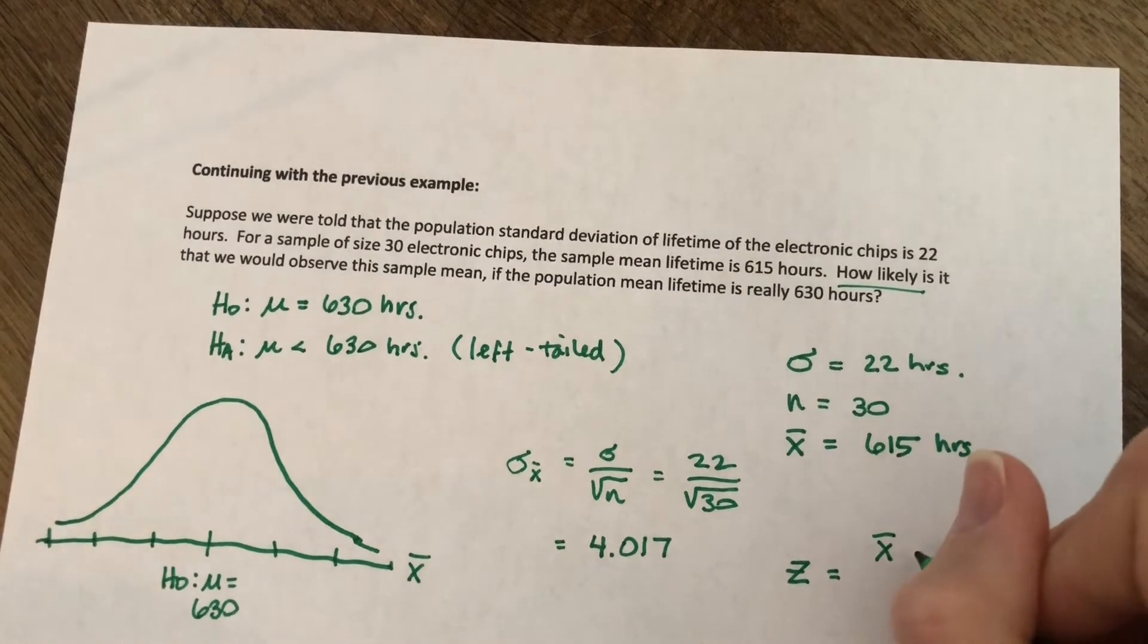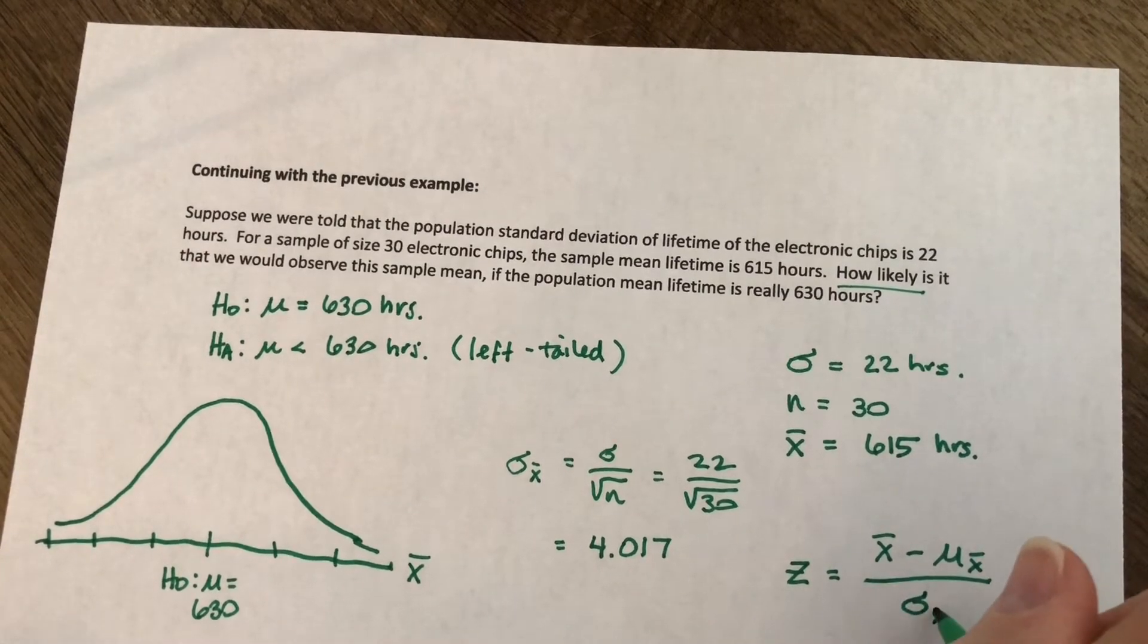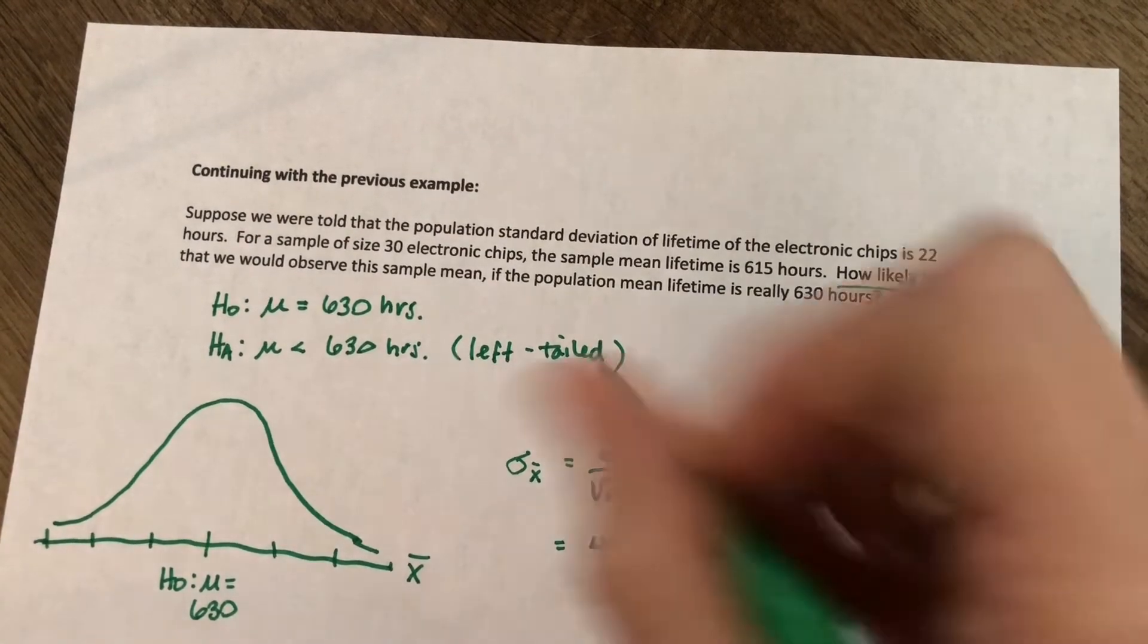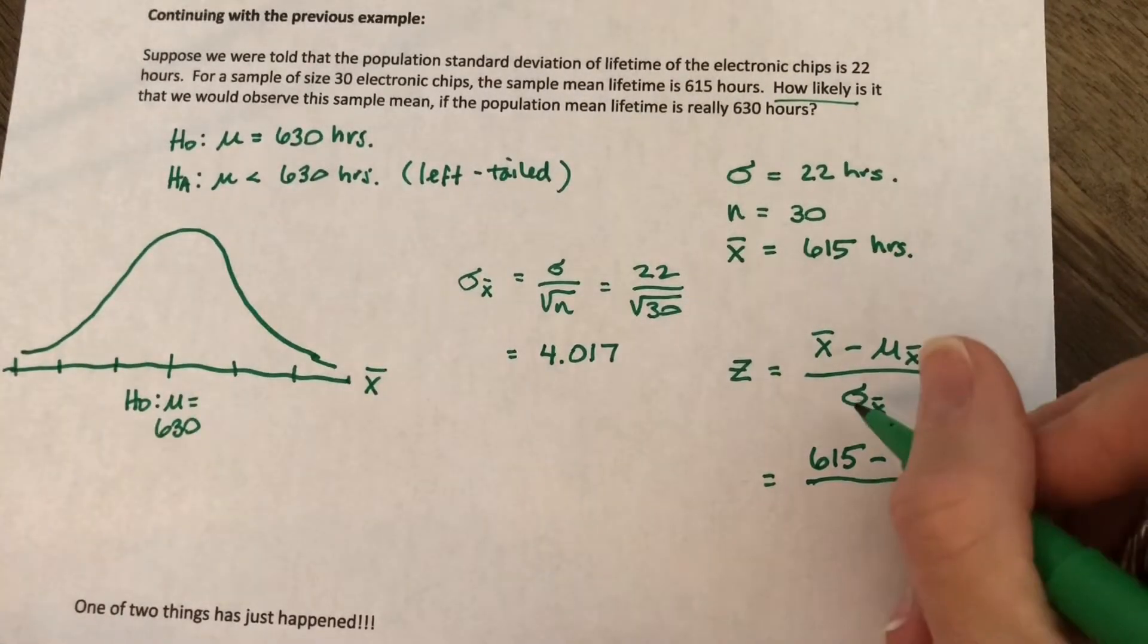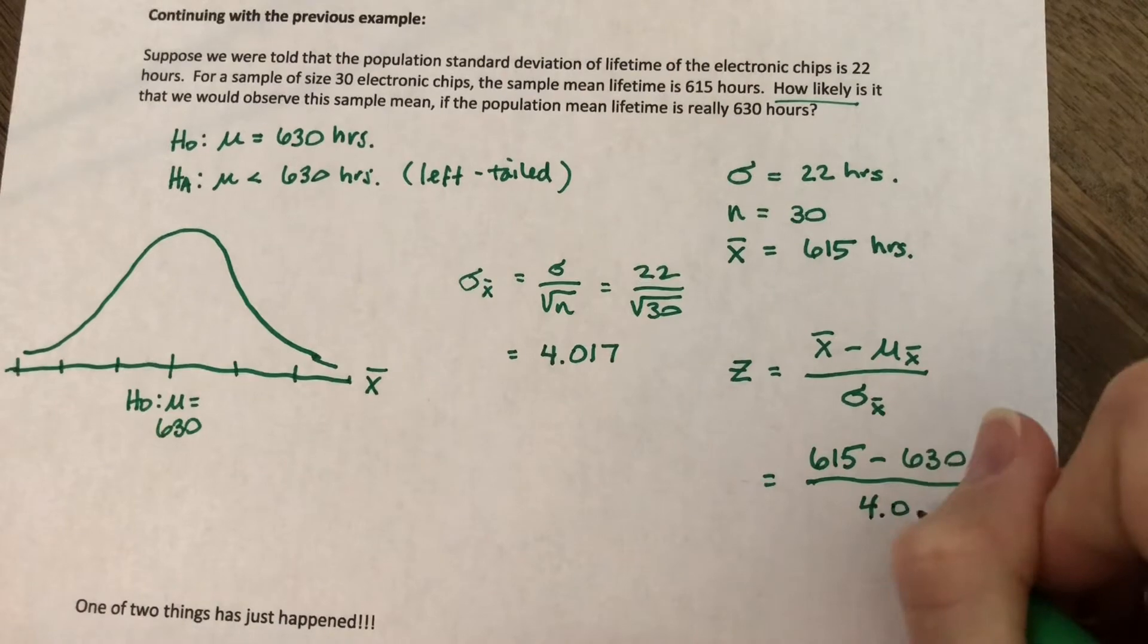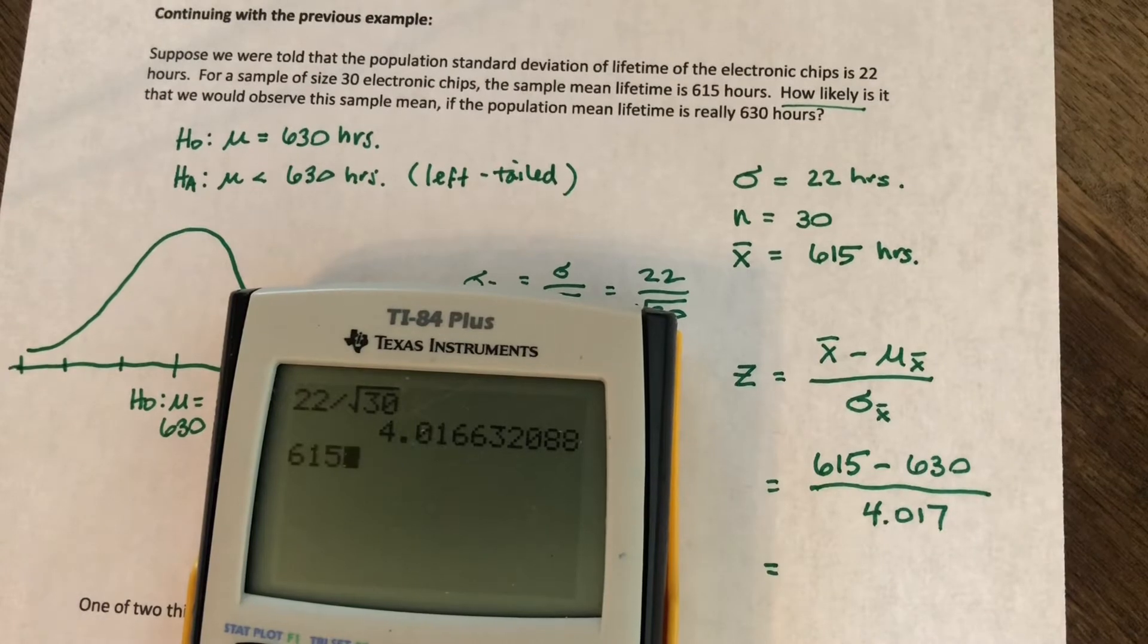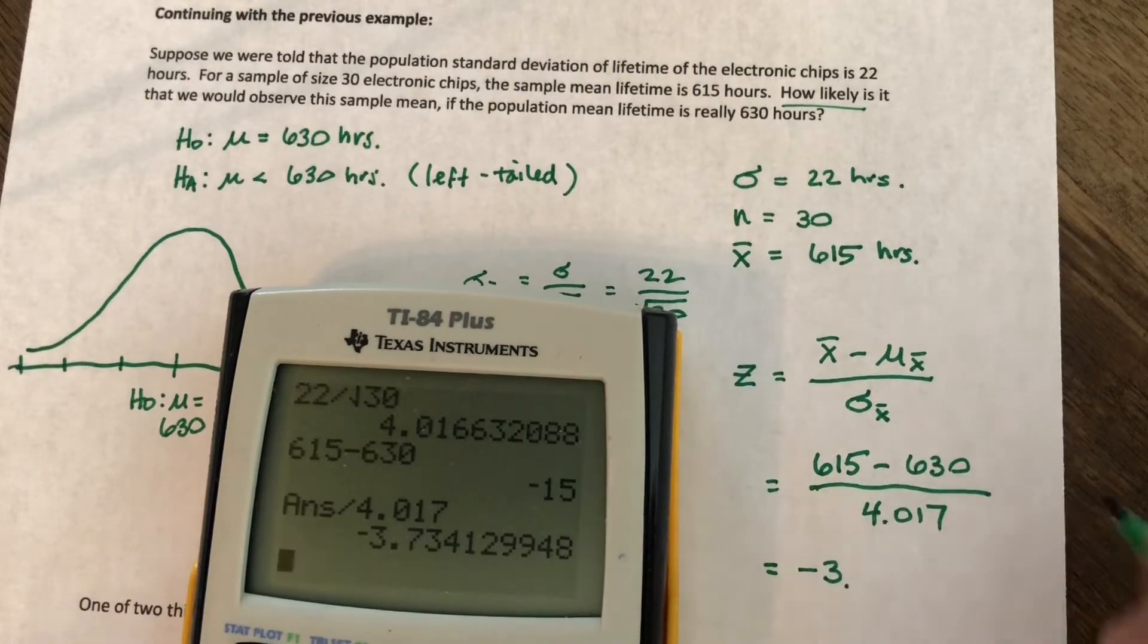But we're looking at the z score for x bar, the mean, not just x. So we need to subtract the mean of all possible sample means and divide by the standard deviation of all possible sample means. x bar is 615. We're subtracting mu sub x bar, which is equal to mu in our null hypothesis. That's 630. So again, we're calculating this assuming the null hypothesis is true. And sigma sub x bar we just found that is 4.017.